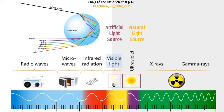The white light is composed of seven different light colors. How do we know that? It's because of diffraction. This is how rainbows happen. When the white light of the sun passes through a droplet of water, it refracts into the seven colors of the rainbow, which are, in order: red, orange, yellow, green, blue, indigo, and violet.